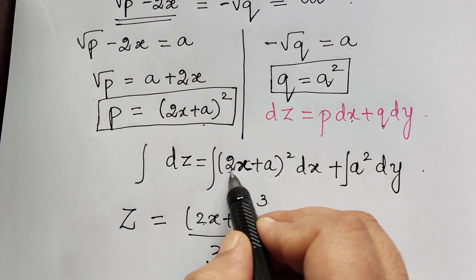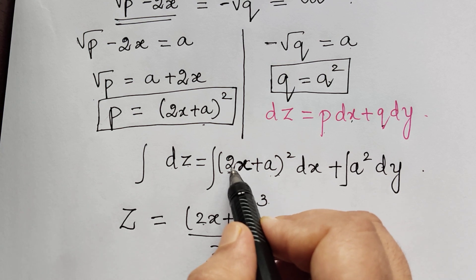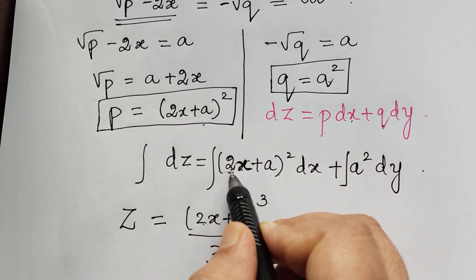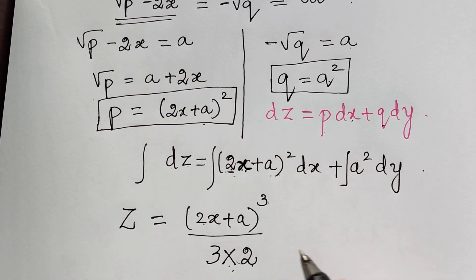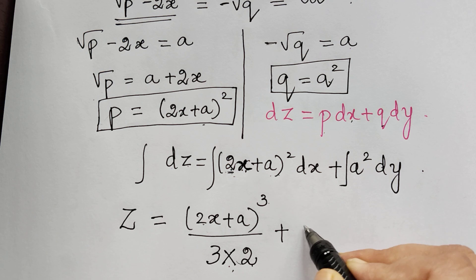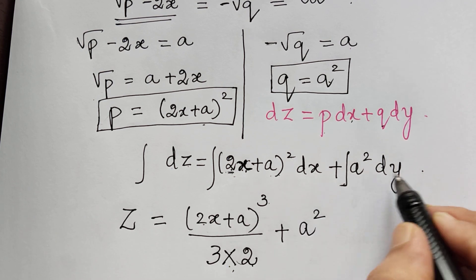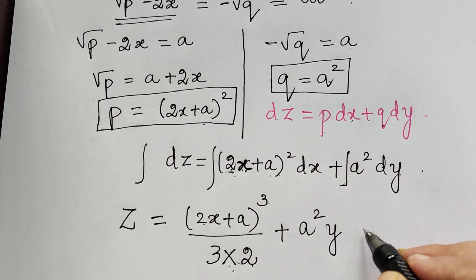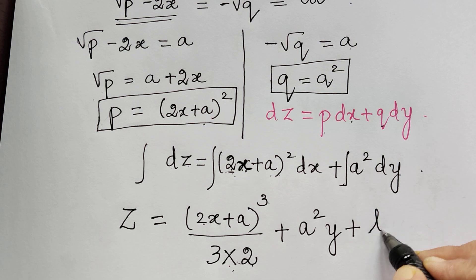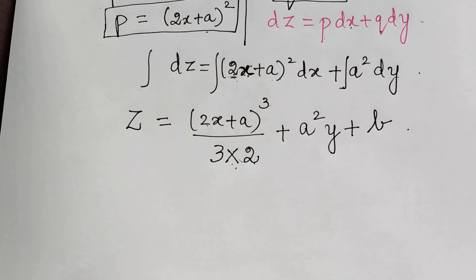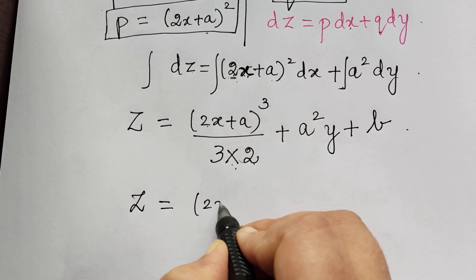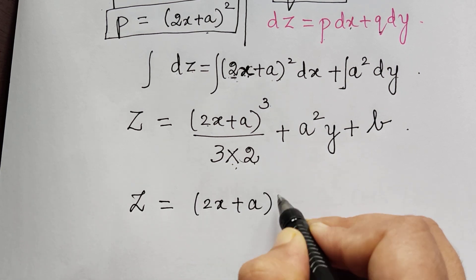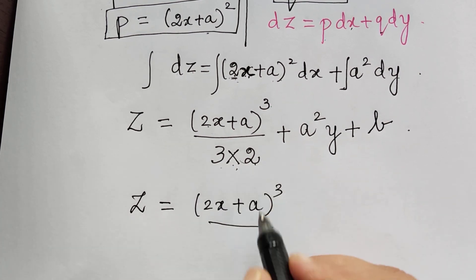The constant in multiplication with the variable is 2, so we take this 2 in the denominator. Plus, a² is a constant, so the integral of a² dy will be a²y plus a constant of integration b. Therefore, the final answer is z = (2x + a)³/6 + a²y + b. This is the required solution.